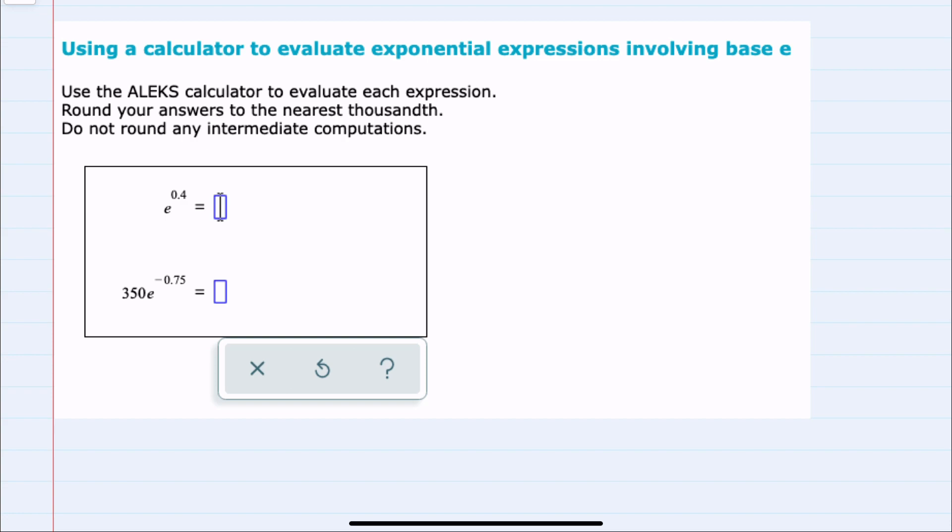We're asked to use the ALEKS calculator to evaluate these expressions, round our answers to the nearest thousandth, and not round any intermediate computations. Instead of the ALEKS calculator, I'm going to use Desmos.